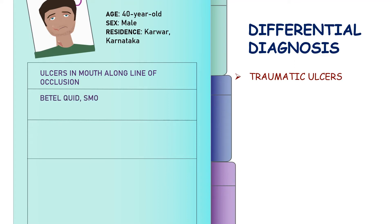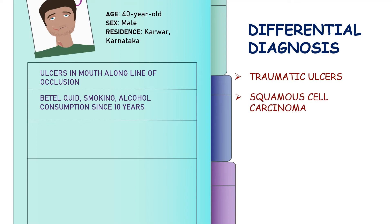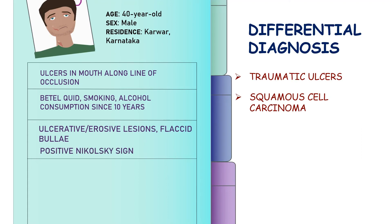The habit of pan chewing, smoking, and alcohol consumption leads you to thinking that the ulcers could be squamous cell carcinoma. Then the clinical presentation of ulcerative erosive lesions along with flaccid bullae and a positive Nikolsky sign makes a good hint towards vesiculobullous diseases.